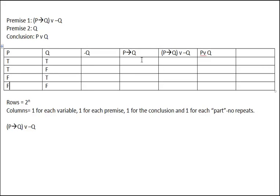Then we fill in the rest of the parts. Not q is simply a negation of q, and when something negates, it reverses the truth values — whatever the column is becomes the opposite. So true becomes false, false becomes true, true becomes false, and false becomes true.